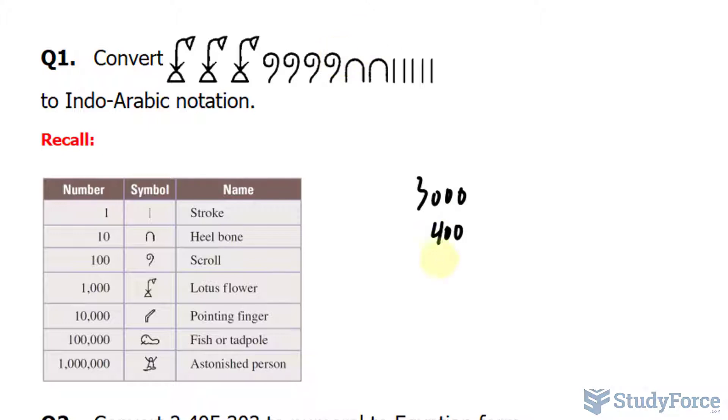two heel bones, that's 20, and five strokes, that's five. Adding these numbers up, we have 3425.